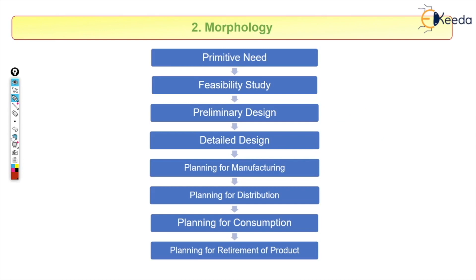Now let's take an example of morphology using a ceiling fan. The primitive need is that we require some equipment — a gadget — that will give us airflow. That is the primitive need. From that fan, we should have some mechanical flow of air.